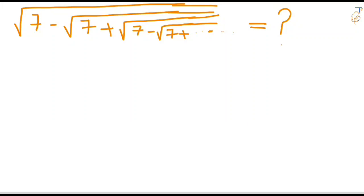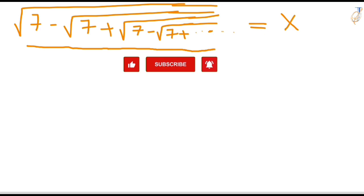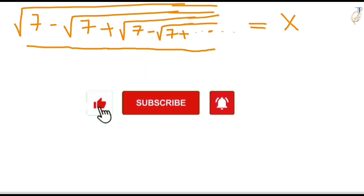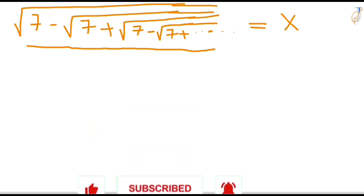Hello everyone. In this video we are going to simplify a radical expression: square root of 7 minus square root of 7 plus square root of 7 minus, and so on — this goes on forever. Let's name it as X. Before we start the solution, please subscribe to my channel and give your feedback. Without wasting time, let's start.